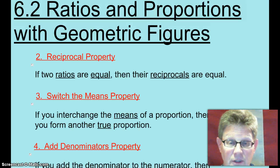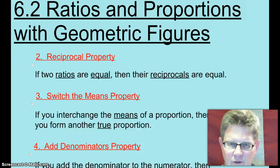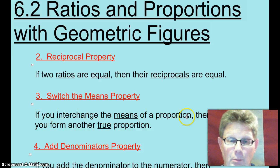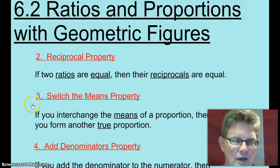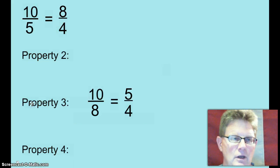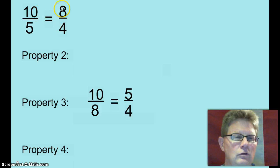That is switch the means property. That's the second and third terms in that proportion. If you interchange the means of a proportion, then you form another true proportion. Ten over five equals eight over four. Well you can switch the second and third terms. Ten over eight equals five over four. Both of those reduce down to five over four. It is another true proportion.